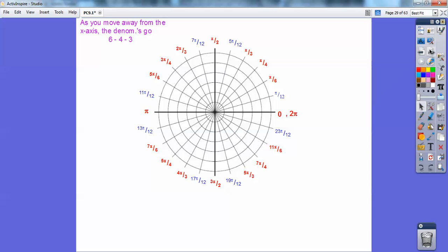So as you move away from the x-axis, notice the denominators go 6, 4, 3. Quadrant 1, the numerator is just pi. Quadrant 2, it's 1 less pi. Quadrant 3 is 1 more pi, 1 more than the denominator. This is 1 less than twice.